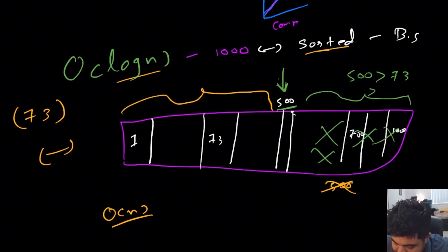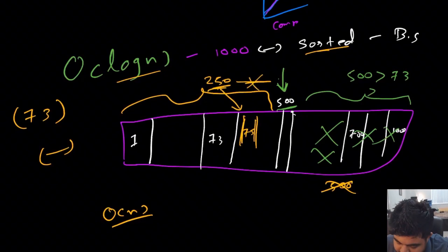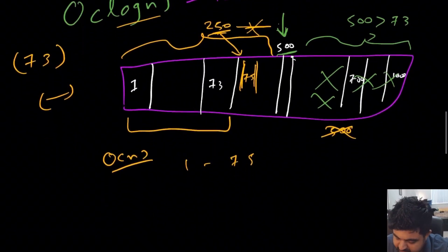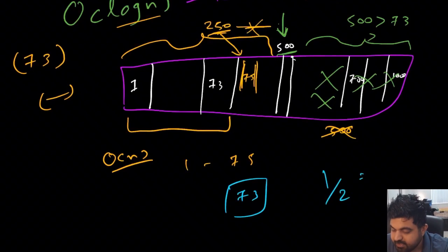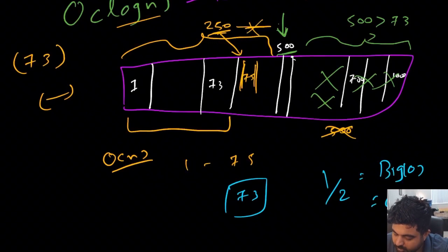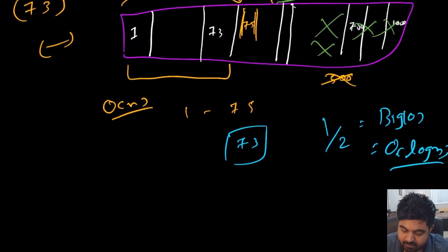Continuing the binary search, we pick the middle of the remaining portion — let's say position 258 has value 75. Because we found 75, we can eliminate that half and only consider values from 1 to 75. We keep repeating until we find value 73 and return the answer. With every iteration we eliminate half the numbers, so we can mark the time complexity for this problem as Big O of log N. Logarithmic solutions are much faster compared to linear solutions.